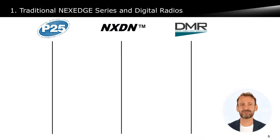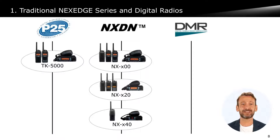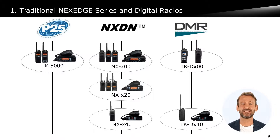Here, we listed three different protocols — P25, NXDN, and DMR — which have been predominant since the beginning of the 21st century. In the past, we have launched TK5000 for P25. The NX series is the old model of the NexEdge series, and the TKD series is for DMR.